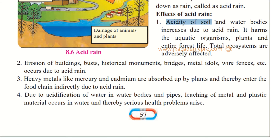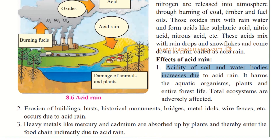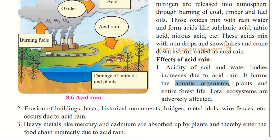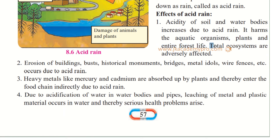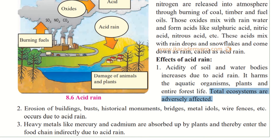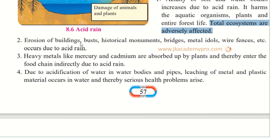The effects of acid rain include: the acidity of soil and water bodies increases. This harms aquatic organisms — living things in the water — as well as plants, so the entire forest and water ecosystem is adversely affected. In other words, industries release gases that mix with rain clouds, come back down, and we end up consuming polluted food and water, which harms us.